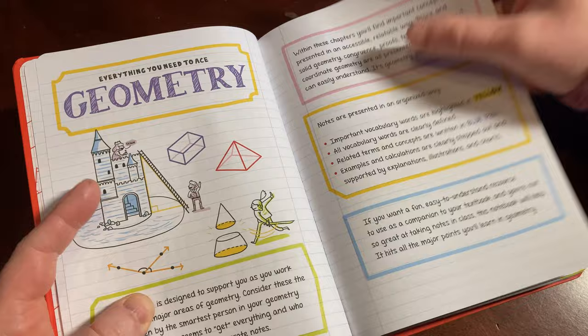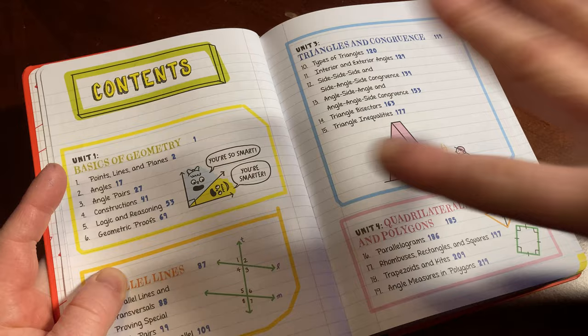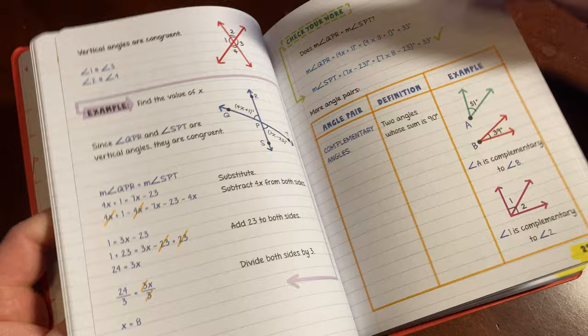It's really like they don't make it a textbook. They make it a book, a geometry book. I mean, I guess it is a textbook, but it's different, right? It's laid out in a different way.